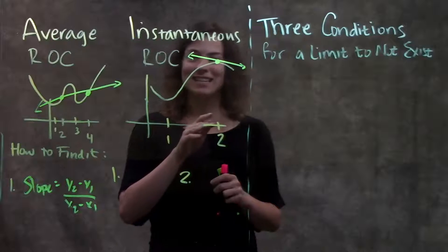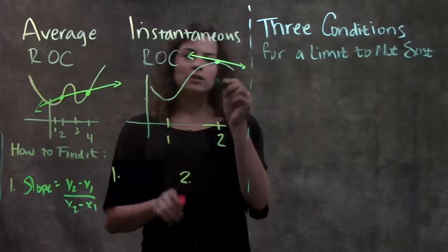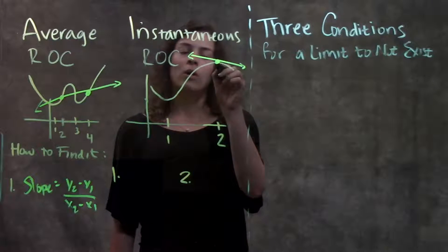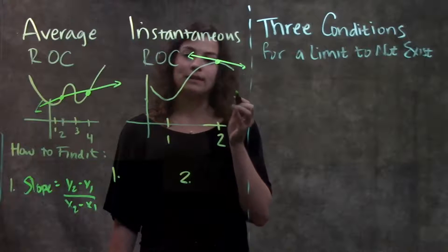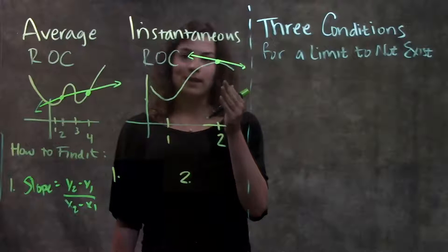The line here is a tangent line. It touches the graph at exactly one point. If we're interested in the slope of this line, we're not able to use our slope formula because we only know one point on the line. We don't have a second point to use for a slope formula.